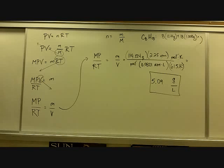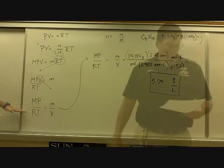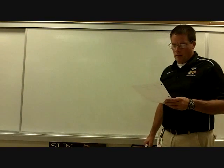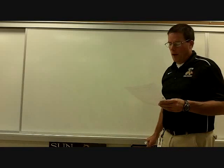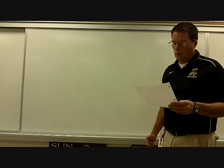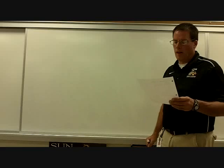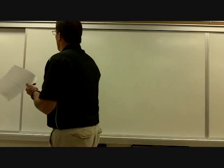The hardest part of this whole problem is getting from PV equals nRT to that rearranged form. Number two: calculate the molar mass of a gas if the density is 8.35 grams per liter at 122 degrees Celsius and 1589 torr. We're calculating the molar mass, so it's very similar.